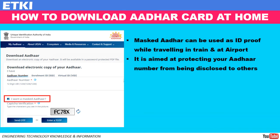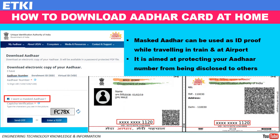Earlier in the video we came across the option 'I want a masked Aadhaar.' Masked Aadhaar can be used as ID proof while traveling by train or at the airport. It is aimed at protecting your Aadhaar number from being disclosed to others. When you check this option, you get an Aadhaar card where the first eight digits are hidden — that is called masking. Whoever refers to your Aadhaar ID cannot see the first eight digits. Use this option only when using your Aadhaar card as ID proof for traveling purposes.